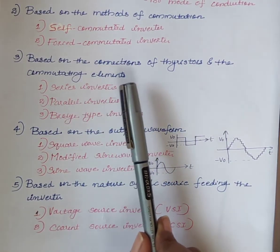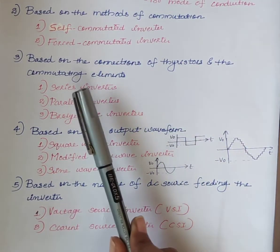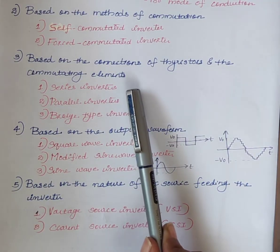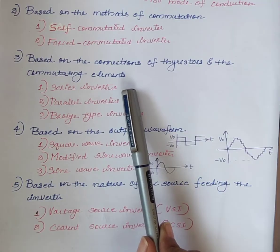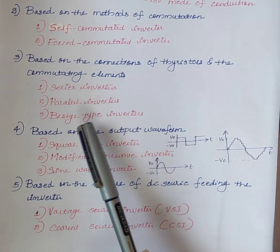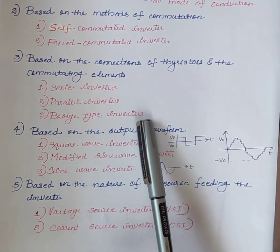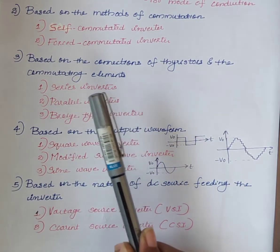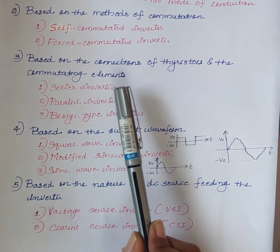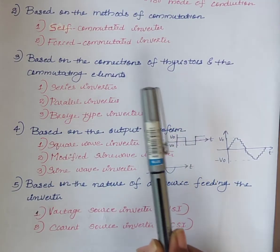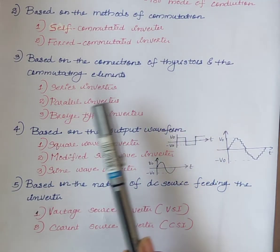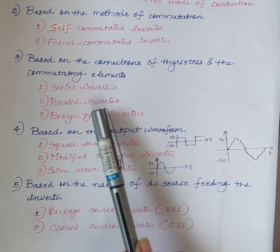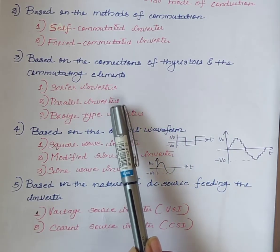Next, based on the connections of thyristors and the commutating elements, inverters are classified into three: series inverters, parallel inverters, and bridge type inverters. In case of series inverters, the commutating components are connected in series with the load. In parallel inverters, the commutating components are connected in parallel with the load.